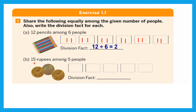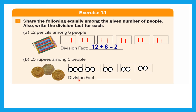Now let's see one more example: share 15 rupees equally among five people. We represent each coin as a small circle, and each box represents one person. Distributing: one rupee to each of the five people, then six through ten rupees, then eleven through fifteen rupees. Each person got three coins — that is three rupees. The division fact is: 15 divided by 5 equals 3. The total amount, 15, is first; divided by 5 people; each person got 3 rupees.